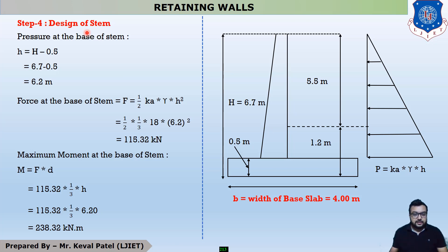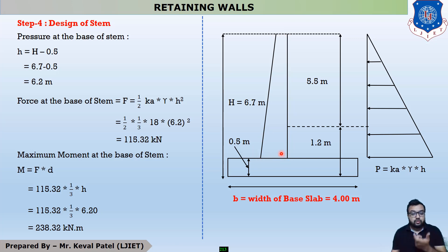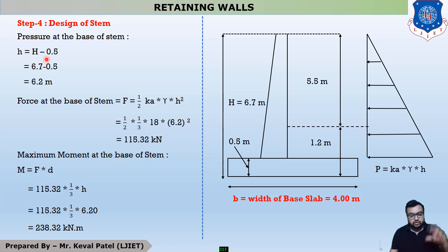The stem has a width of 0.2 meters at the top and 0.45 meters at the bottom. Our total height is 6.7 meters, with the thickness of the slab being 0.5 meters. So the height of the stem, denoted as small h, is H minus 0.5, which gives us h = 6.2 meters.